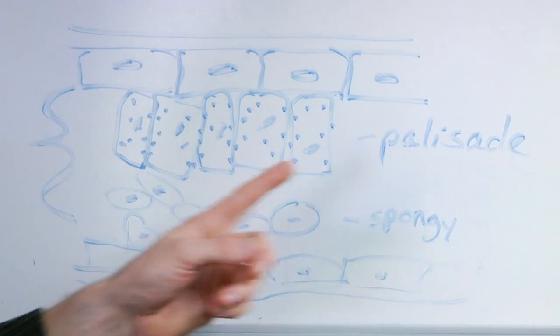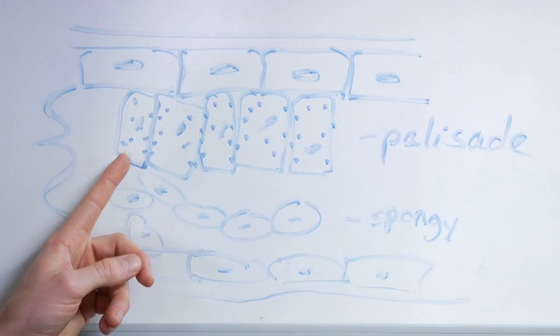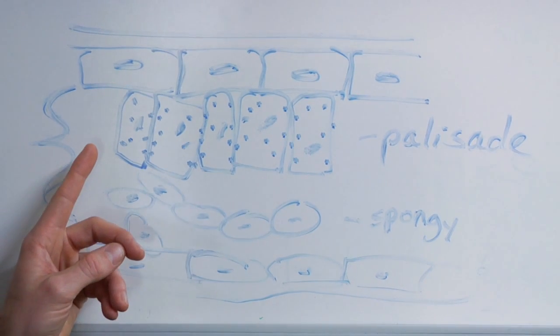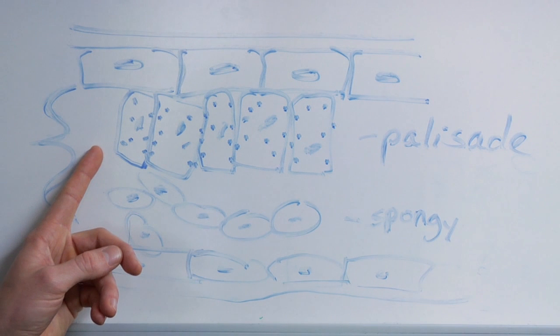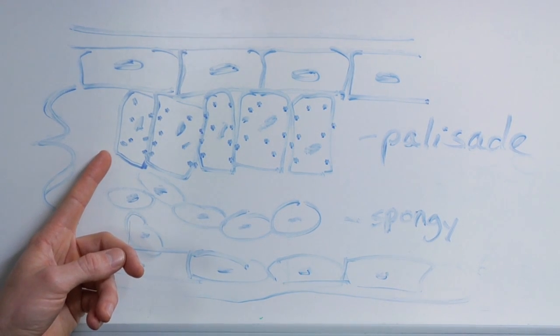There's two types, the palisade layer, which is this top one. They are tightly packed, slightly rectangular and elongated. They have a lot of chloroplasts, they pack chloroplasts in, and this is the site of the majority of photosynthesis.